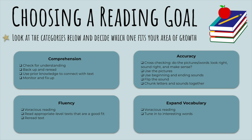Then there are two more categories. Fluency is where we're able to read the words — not too fast that it's hard to keep track of things, but not too slow so that we still understand what's going on. Strategies to help with fluency include voracious reading — reading lots and lots — reading appropriate level texts that are a good fit, and rereading texts many times to become fluent. The last category is expand vocabulary, which you can build through voracious reading and tuning into interesting words.